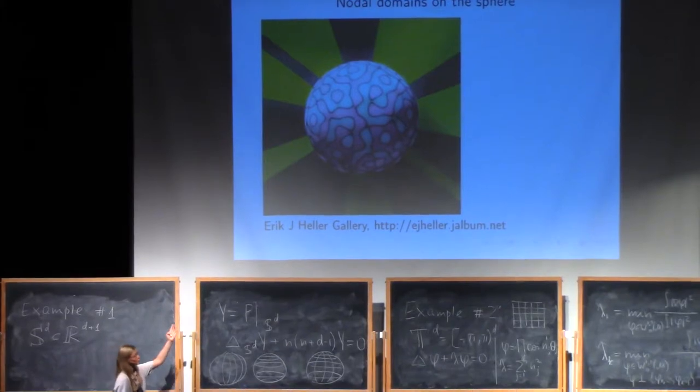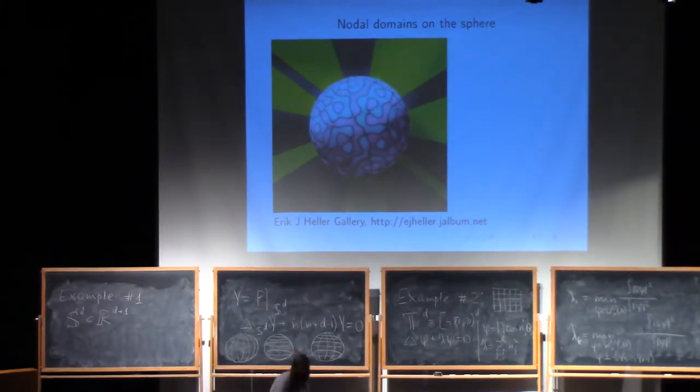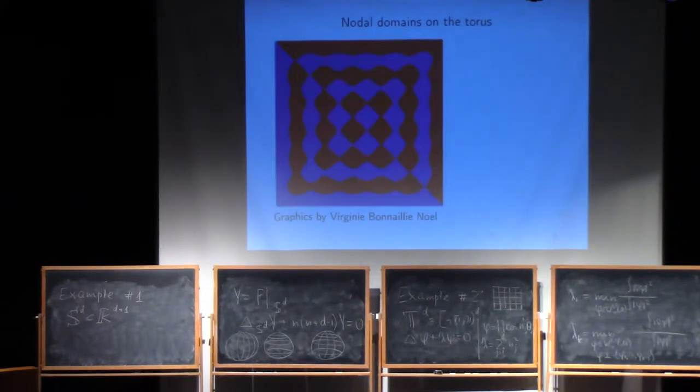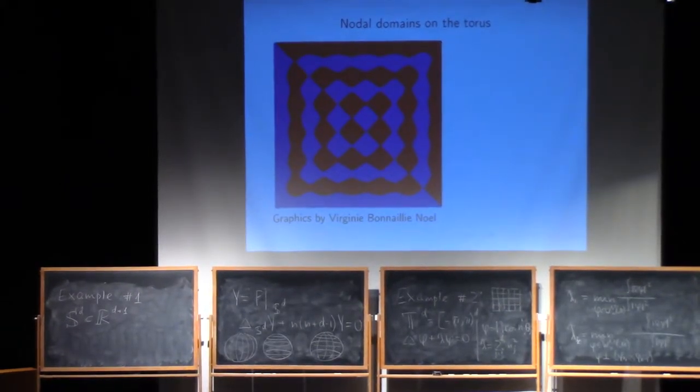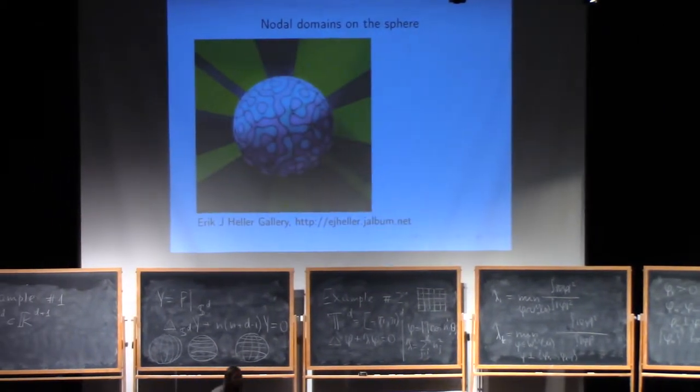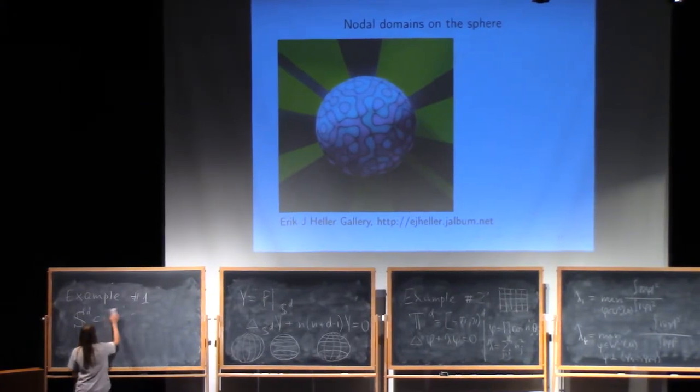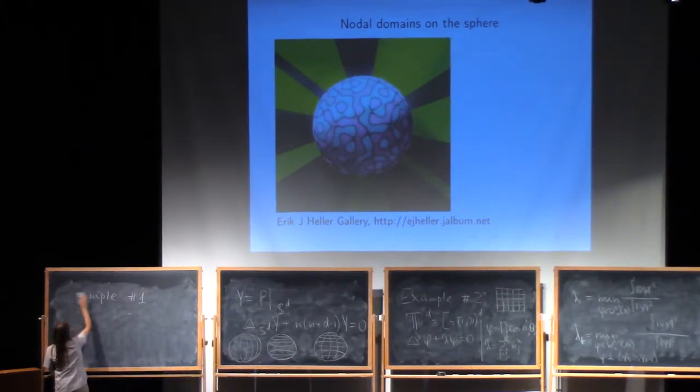Looking at this picture, you can say that the eigenvalue is quite large. But probably, if you compare this one and that one, the eigenvalue here is smaller than the eigenvalue there. How do we know that? How do we know that? There is the following statement.